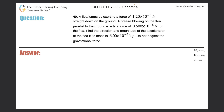Number 40: A flea jumps by exerting a force of 1.2×10⁻⁵ N straight down on the ground. A breeze blowing parallel to the ground exerts a force of 0.5×10⁻⁶ N on the flea. Find the direction and magnitude of the acceleration of the flea if its mass is 6×10⁻⁷ kg. Do not neglect the gravitational force.